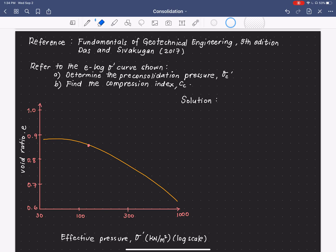So, the graph shows the relationship of the effective stress here, the effective pressure, and the void ratio. So, this is the given curve, consolidation curve, and from there, we will determine the preconsolidation pressure.